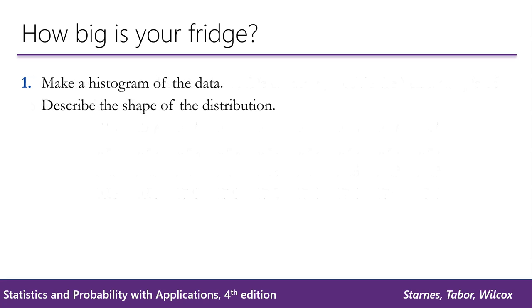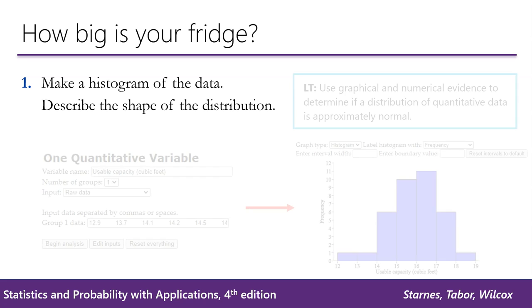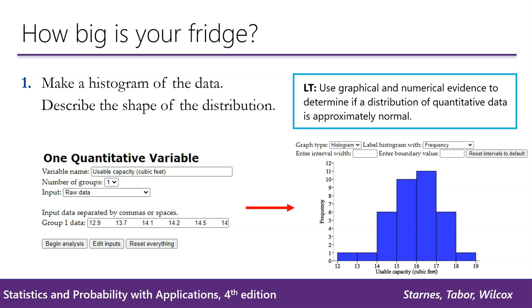Question 1 asks us to make a histogram of the data and describe the shape of the distribution. I prefer to make this histogram using the SPA staplet site. Under one quantitative variable, you can enter in the variable name. Don't forget the units. You can copy and paste the data and then click begin analysis. Make sure you change the graph type to a histogram and it builds it all for you. You can also make a histogram using a calculator.